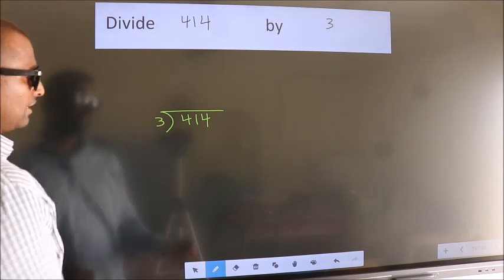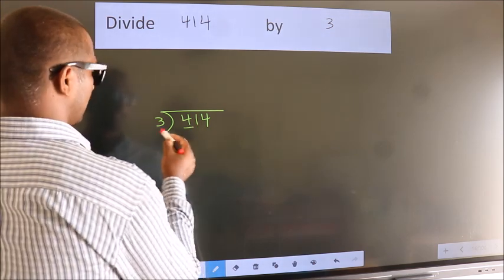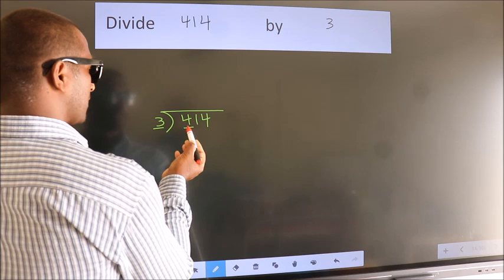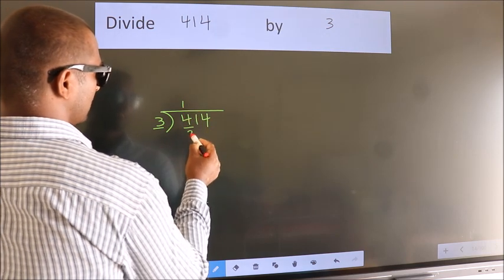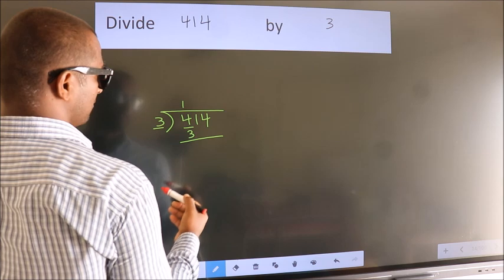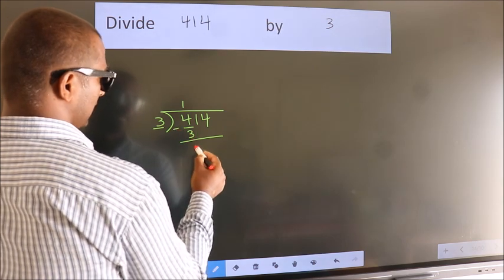Next. Here we have 4, here 3. A number close to 4 in 3 table is 3 1s 3. Now we should subtract. We get 1.